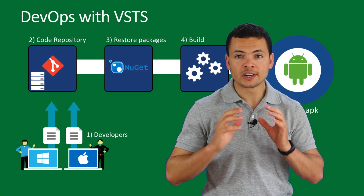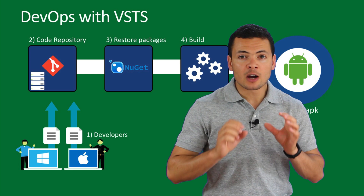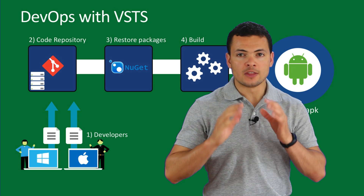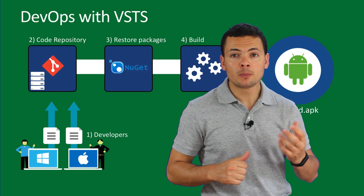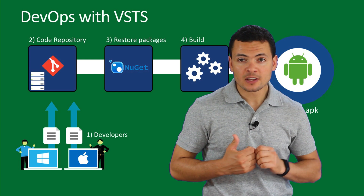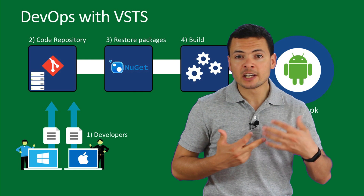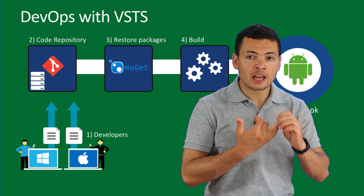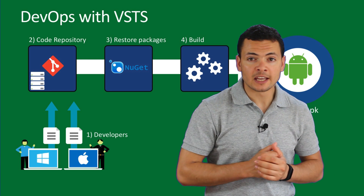The goal here is to create a continuous integration pipeline to build our Xamarin Android project. The CI pipeline will start by getting the source code from GitHub, then a second step of restoring the NuGet packages, building the Android project to generate the APK, then copying that APK into a persistent folder so that we can get it later.